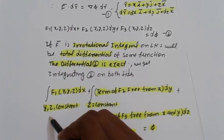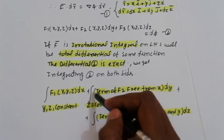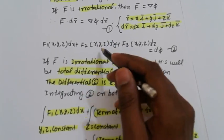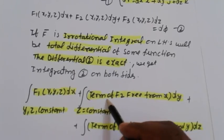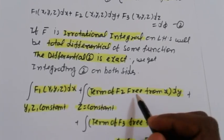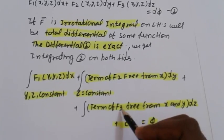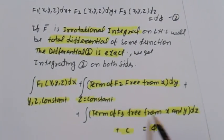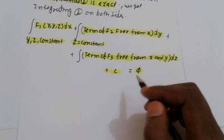Integrating both sides: the first term is the integral of F1(x,y,z) dx keeping y and z constant. The second term considers only those terms in F2 that are free from x. The third term considers only those terms in F3 that are free from x and y, integrated with dz, plus a constant C. This gives the required scalar potential function phi.